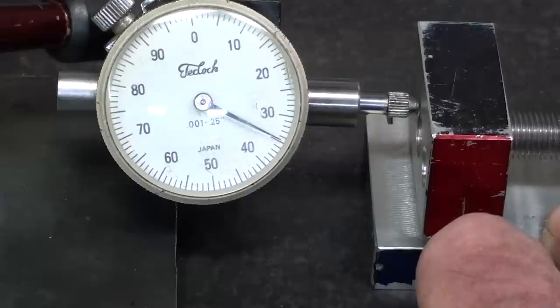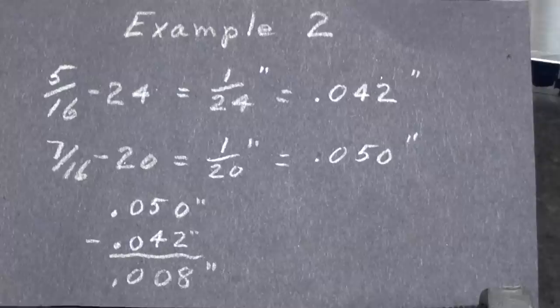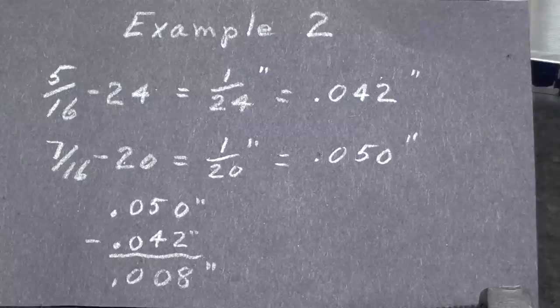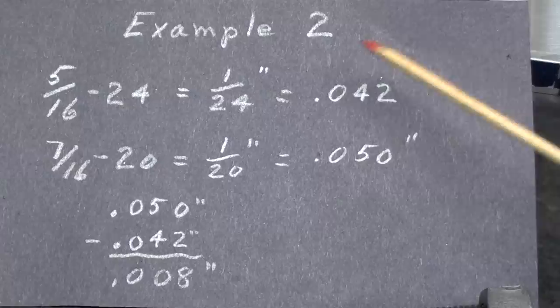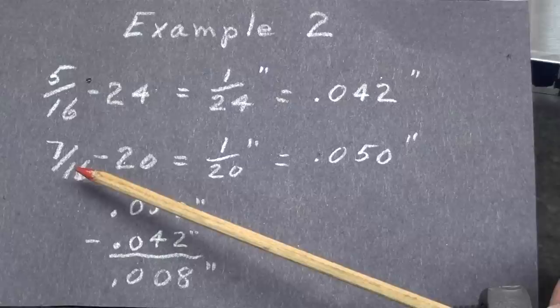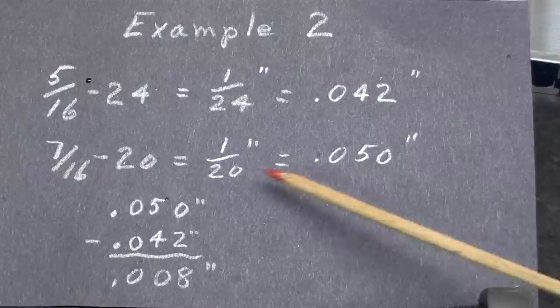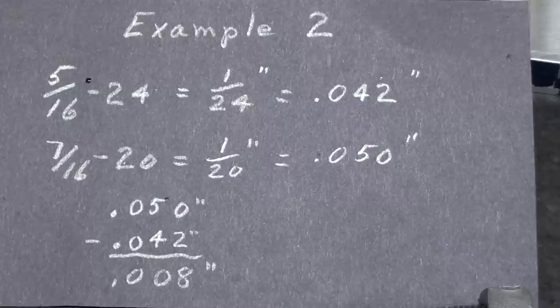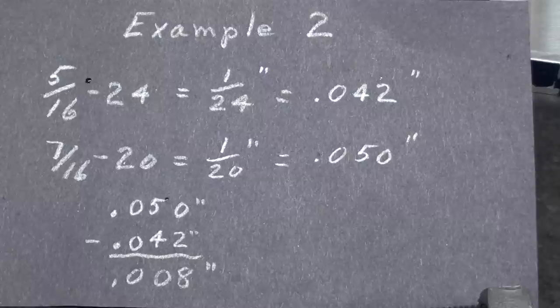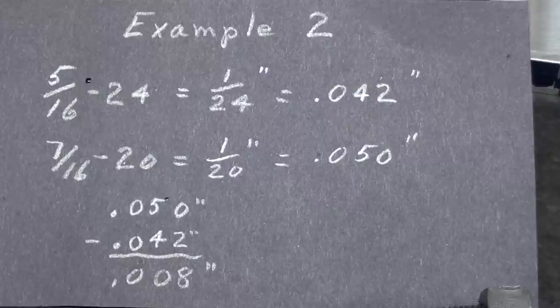Here's the other differential thread, and let's go over the math real quickly. In example number two, the smaller thread is five-sixteenths twenty-four, which has a lead or a pitch of one-twenty-fourth of an inch, or forty-two thousandths. The larger of the two threads is a seven-sixteenths twenty, which has a pitch or lead of one-twentieth of an inch, which is fifty-thousandths. When we subtract one from the other, that's the difference, it's only eight-thousandths, so that would require an extremely fine thread to move only eight-thousandths of an inch per revolution. But let's check that out and prove it with the dial indicator.